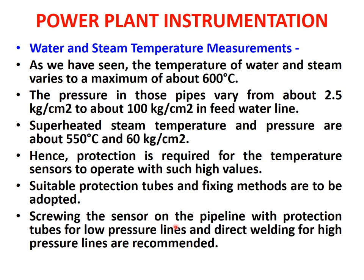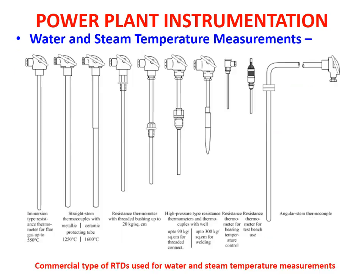For low pressure lines with lower temperatures, the sensor can be directly screwed onto the pipeline to measure temperature. For high temperature or high pressure lines, direct welding is recommended — a permanent weld is required to measure the temperature and pressure of those lines.